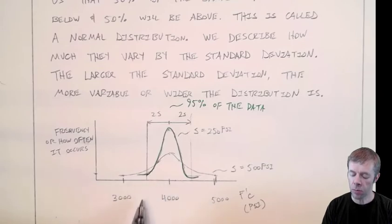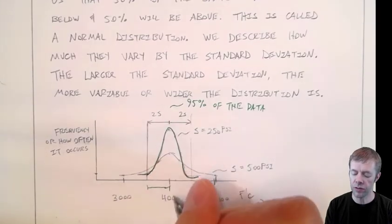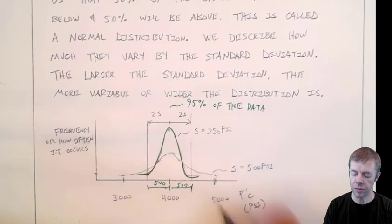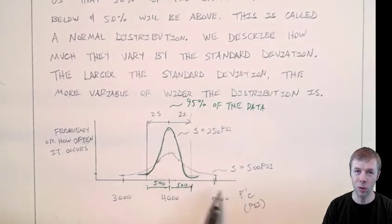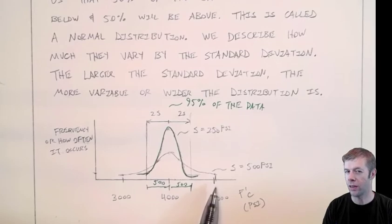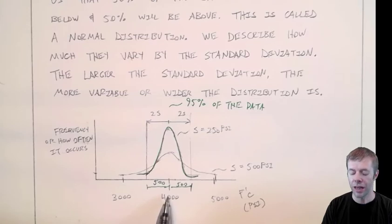That means 95 percent of the time only five out of a hundred times will I be outside of this range for that material. Notice this is somewhere around 500 psi. This is about a thousand psi swing here. So if I have a very low standard deviation I'm approximately plus or minus 500 psi.